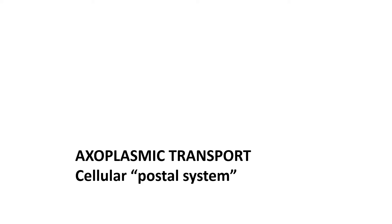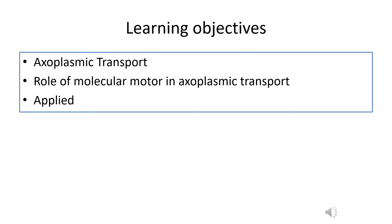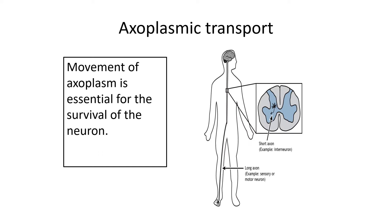Axoplasmic transport, also known as the cellular postal system. The human central nervous system contains approximately 100 billion neurons, but they are not all the same length. Axons vary in their length. Some neurons, for example interneurons, have small axons that exist in the spinal cord, while some neurons extend from the spinal cord to different parts of the body — for example, to the great toe — and their axon length is much longer.